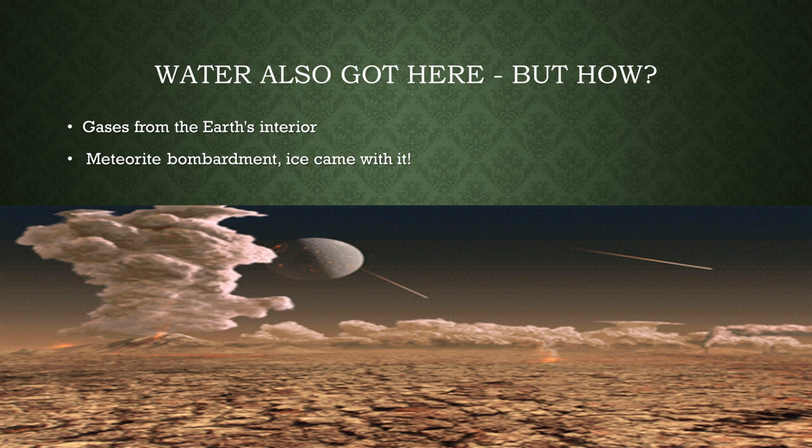So how did we get water? Well, according to science, gases from the Earth's interior rose to the surface. But we also got some meteorite bombardment. Most of these meteorites didn't consist of stone, rock, and metal, but of ice. So when these ice meteorites hit Earth, they melted and formed water.